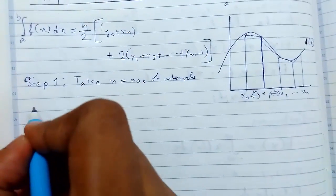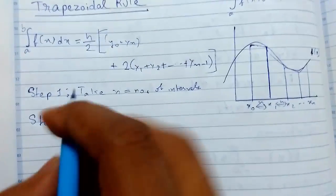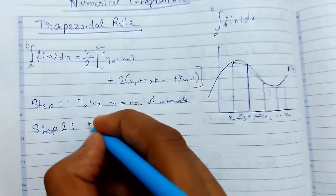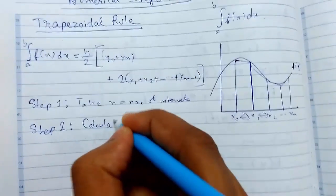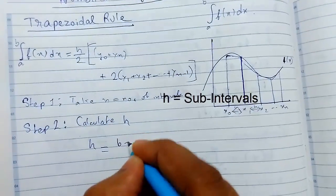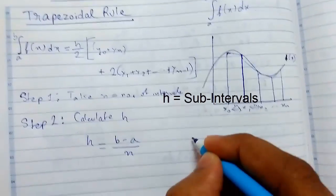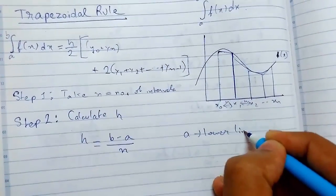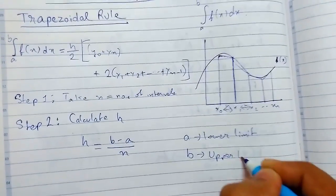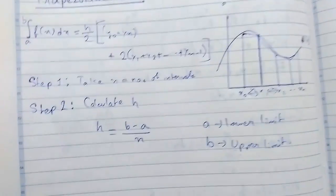This will be given in the question. Step 2 - Calculate h, where h = (b - a)/n. Here a is the lower limit and b is the upper limit of integration.